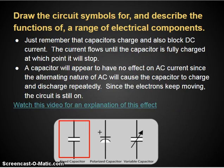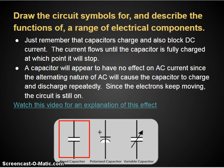Capacitors block the flow of DC currents. They block the flow of DC current because the DC current flows into the capacitor. The capacitor charges, but it can't pass through. When the capacitor is fully charged, the electrons will stop conducting electricity.